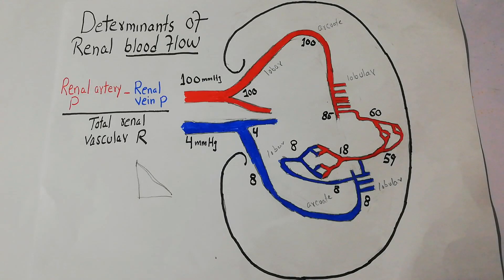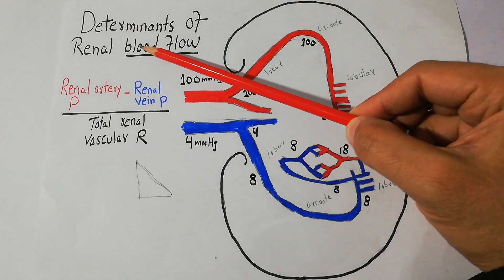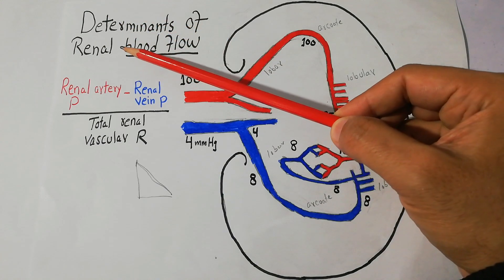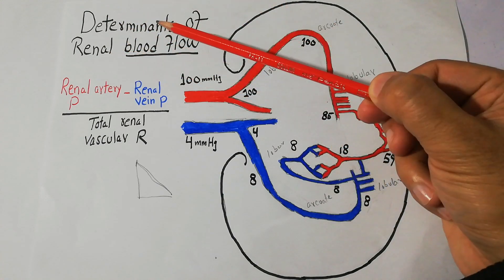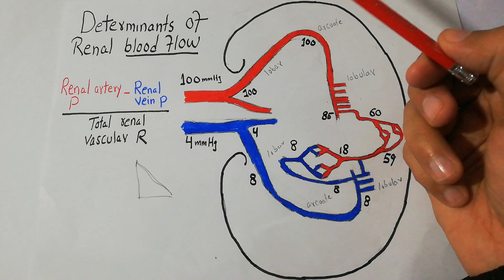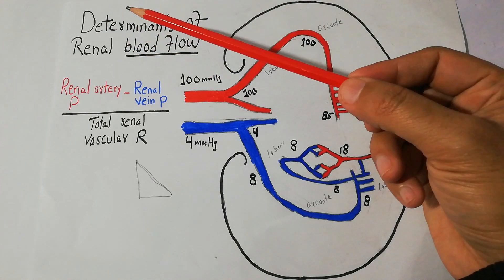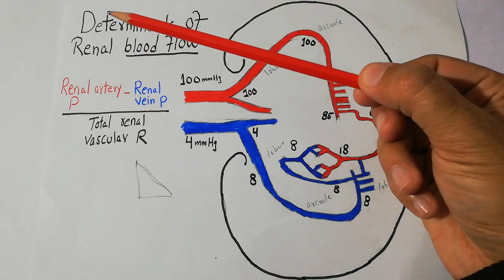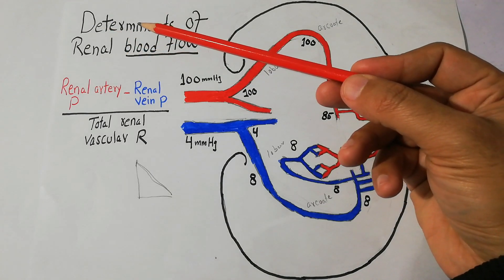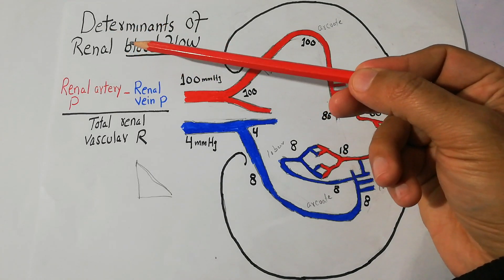Today in this lecture, we will talk about concepts related to renal blood flow and especially the determinants of renal blood flow — the factors which determine or have an impact on renal blood flow. The determinants of renal blood flow are important because any change in any determinant can increase or decrease the renal blood flow.